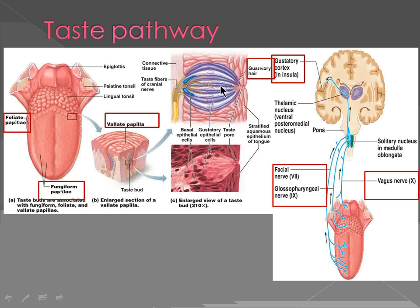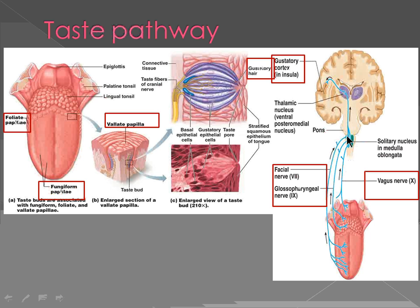Looking at a typical taste bud: the cells are known as gustatory cells, and they have little hairs which open into an area called the gustatory pore or taste pore, where the fluid-filled solution comes in and stimulates them. On the sides are basal cells, which help replenish the gustatory cells. When the gustatory hairs are stimulated, impulses are carried to the cell and then into the cranial nerve fiber — 7th, 9th, or 10th — depending on the region of the tongue. These three cranial nerves carry it, synapsing along the way, to the gustatory cortex in the insula and the parietal lobe.